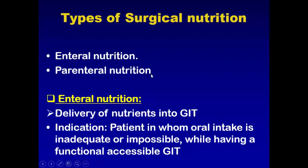The types of surgical nutrition are either enteral nutrition or parenteral nutrition. Enteral nutrition is the delivery of nutrients into the gastrointestinal tract. The indication is in malnourished surgical patients where oral intake is inadequate or impossible, while having a functional and accessible GI tract.